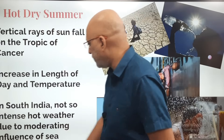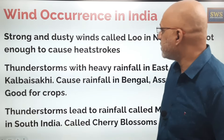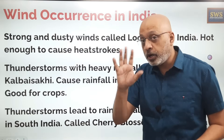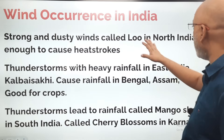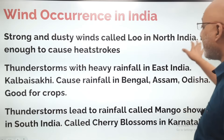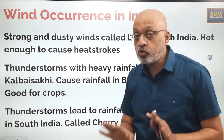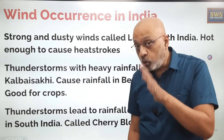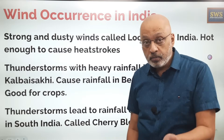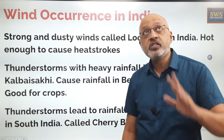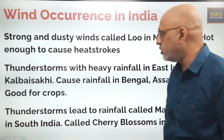Due to the moderating influence of the sea, wind occurrence varies across India. There are strong dusty winds called Loo in north Indian states — very hot winds, sometimes accompanied by dust storms. These are enough to cause heat strokes, which is why people are advised not to go out during afternoon in April and May. Recent studies show that even sitting in a closed room with only a fan can cause heat stroke.